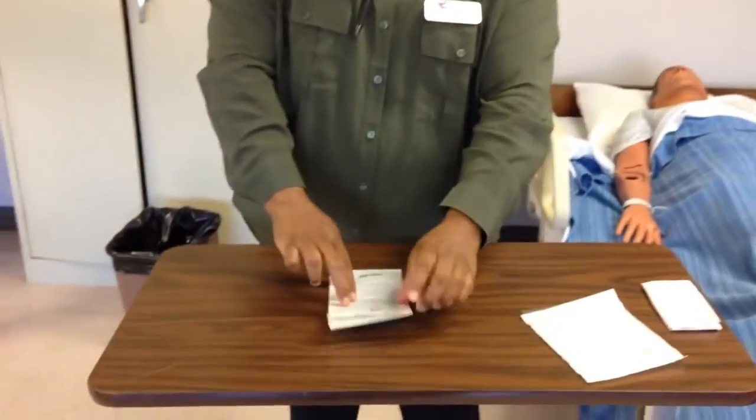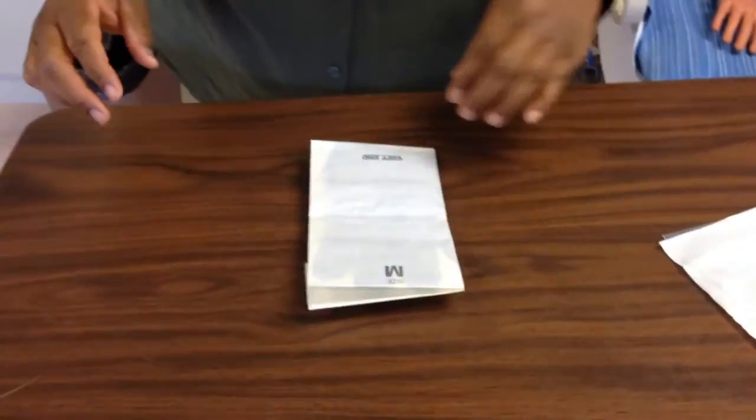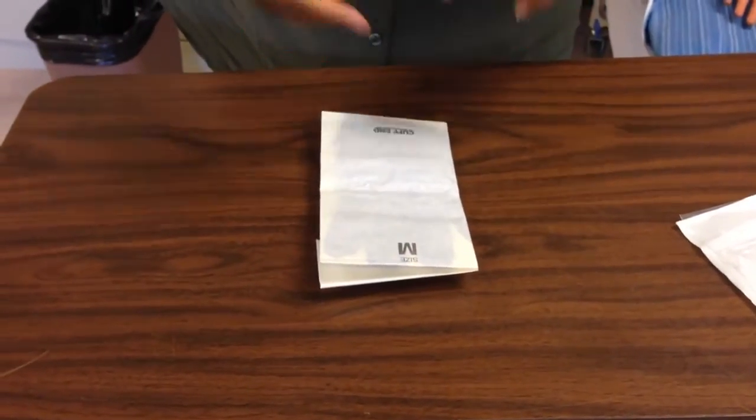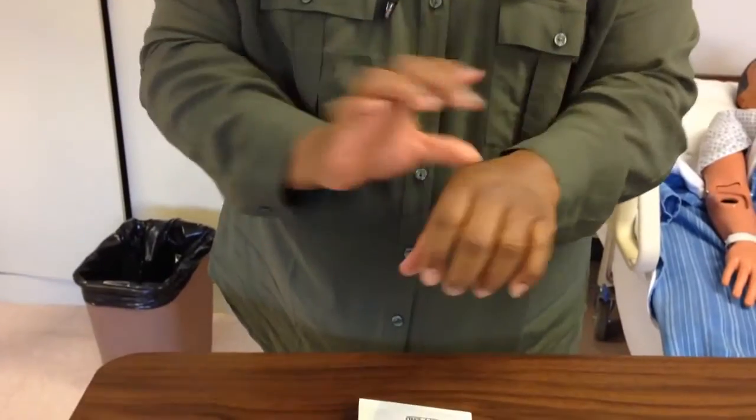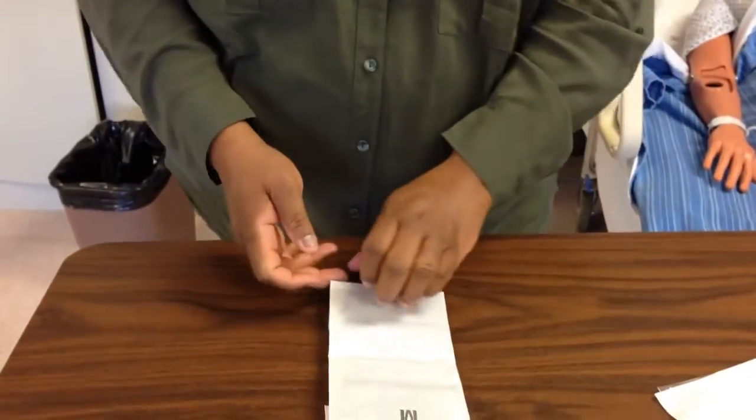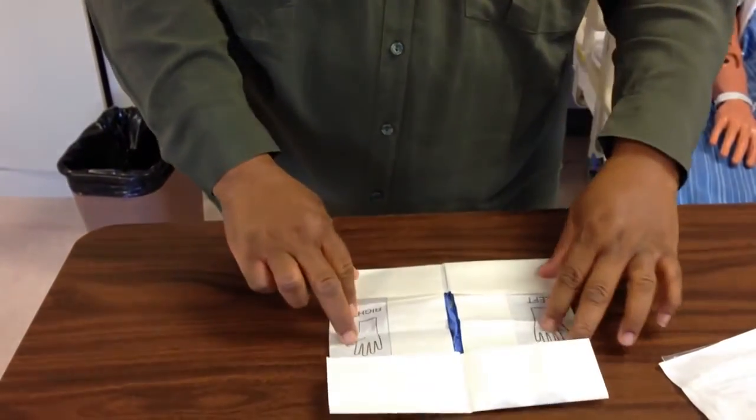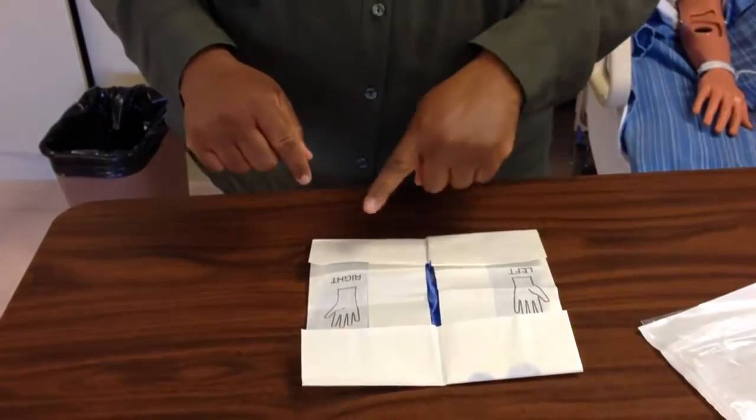I'm going to carefully open my sterile gloves and it says cuff in. That's the portion that will be around my wrist, the cuff. It says right and left.